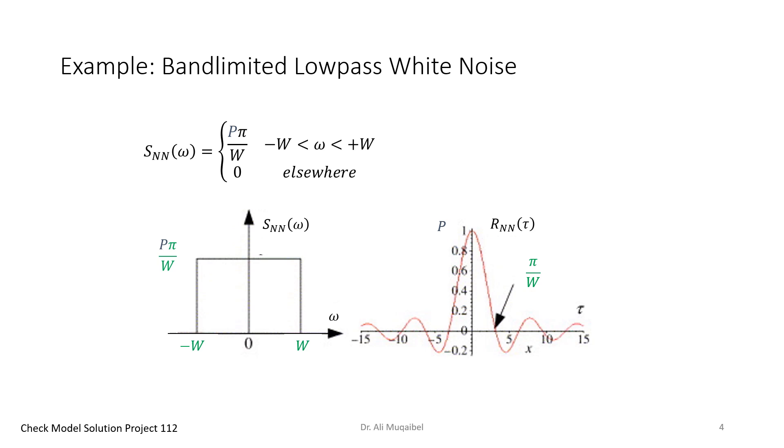Now we consider the band-limited lowpass white noise. It is white noise because it has a constant value, but it's band-limited by W. If the total power is P, you know that the area under this curve should give you the power. If you use ω, it's going to be 1/(2π) times the area.